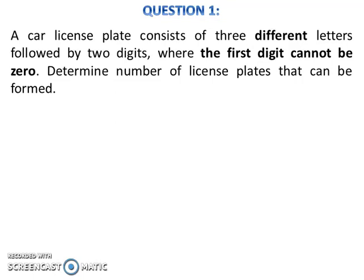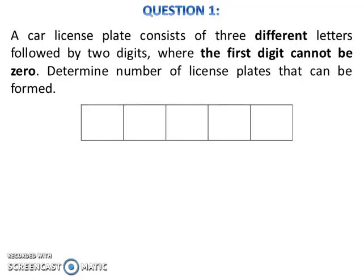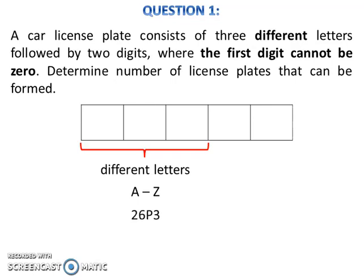To solve this problem, draw 5 slots like this. The first 3 slots must be filled with different letters. There are 26 different letters in the alphabet, so the number of ways to arrange the letters in the first 3 slots is 26P3.